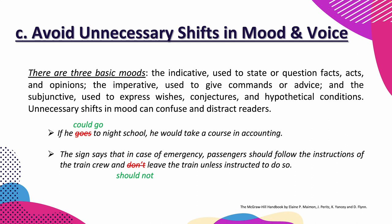Let's take a look at the last example. 'The sign says that in case of emergency, passengers should follow the instructions of the train crew and don't leave the train unless instructed to do so.' This is not consistent. You need to be consistent even with moods. In this case, the main clause uses 'should,' so be consistent — use 'should' in the second clause as well. Instead of 'don't,' use 'should not': 'should not leave the train unless instructed to do so.'